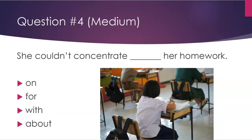Number four: She couldn't concentrate ___ her homework. The options are: on, for, with, about. The answer is: on.